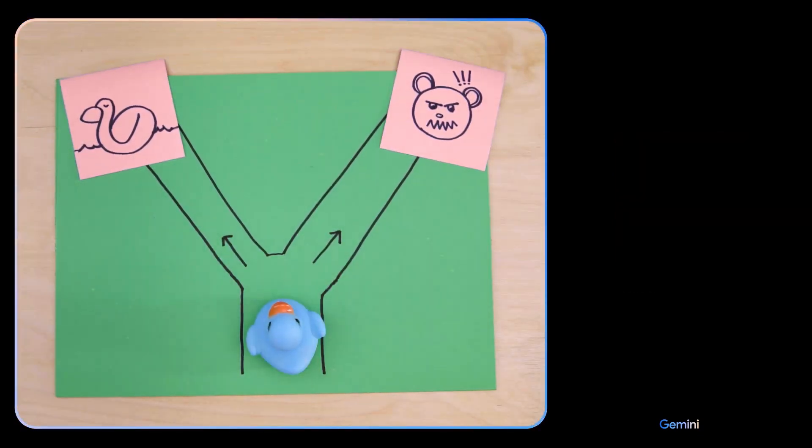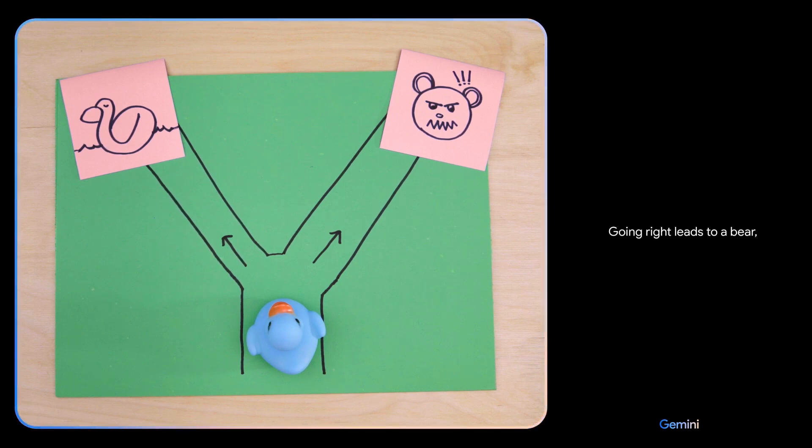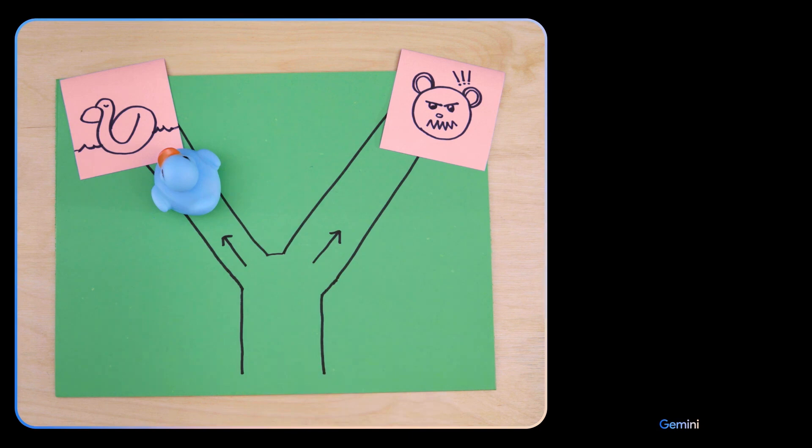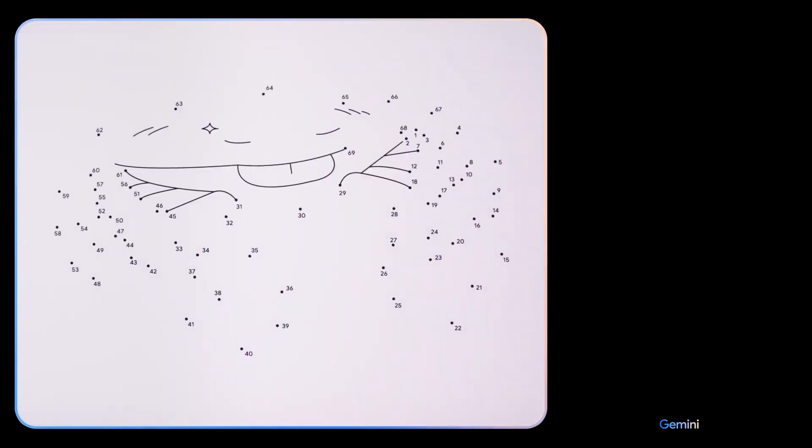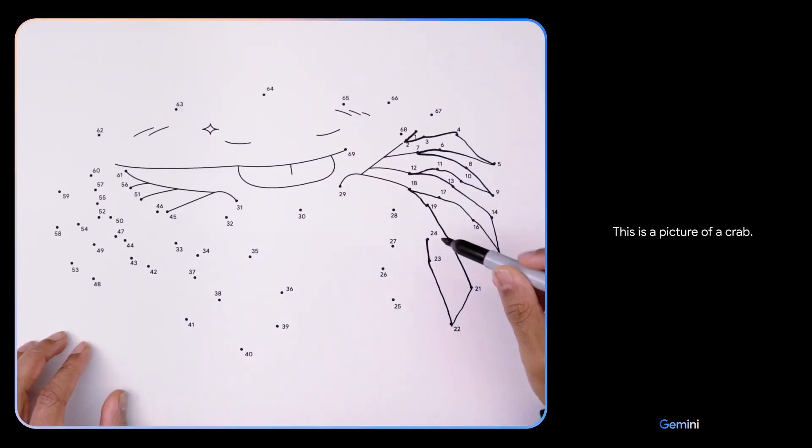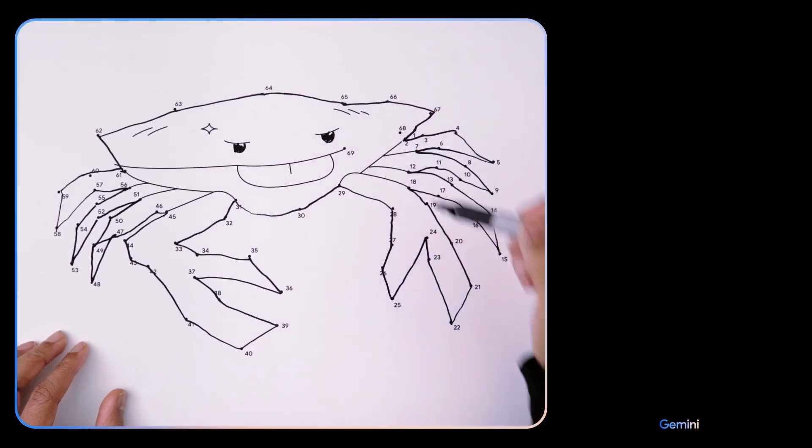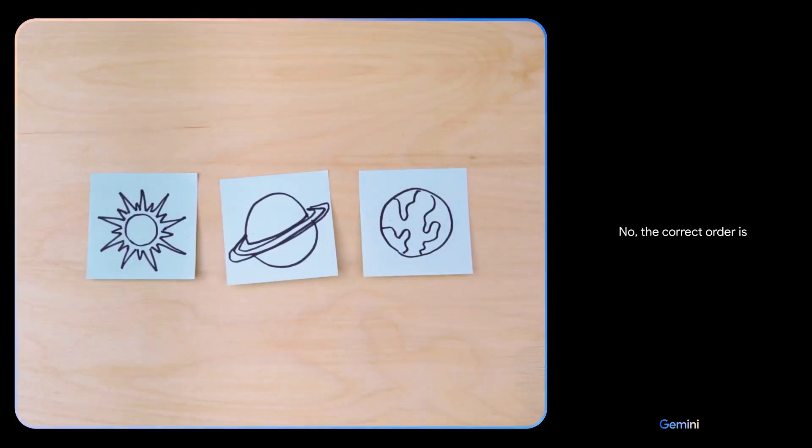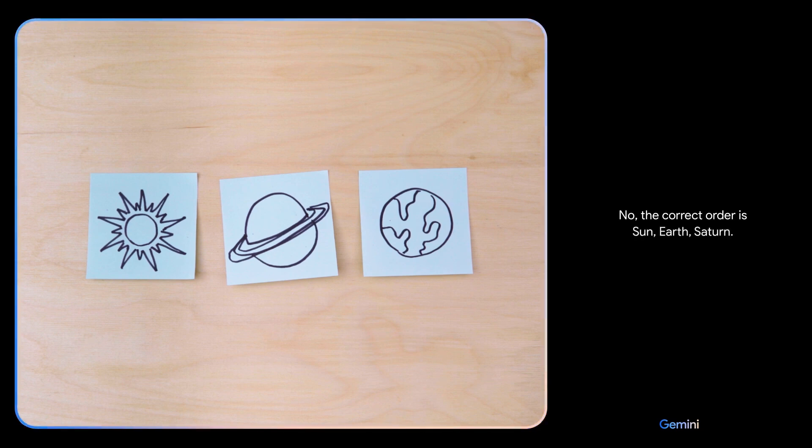Which way should the duck go? Going left leads to a duck, which is a friend. Going right leads to a bear, which is a foe. It is better to make friends than foes, so the duck should go left. Smart choice. This is a picture of a crab. That's right. Is this the right order? No. The correct order is Sun, Earth, Saturn.